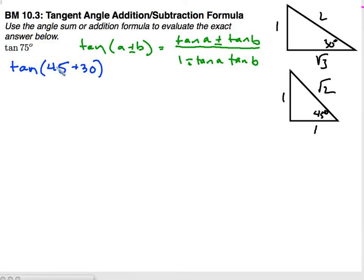I'm just going to plug in our 45 and 30 for a and b. So I will have the tangent of 45 plus the tangent of 30 all over 1 minus tangent 45 times tangent of 30.